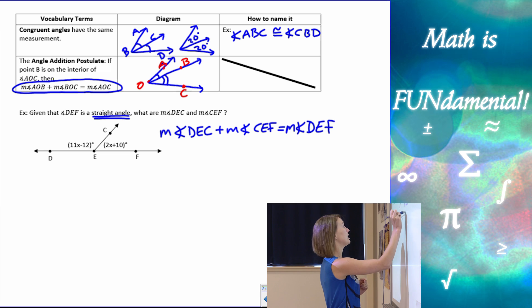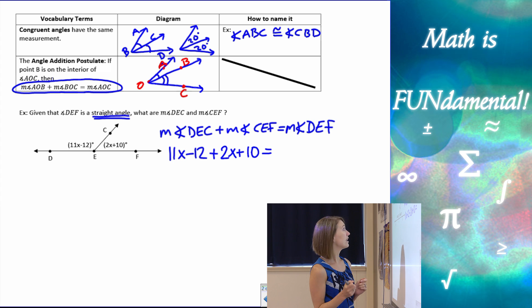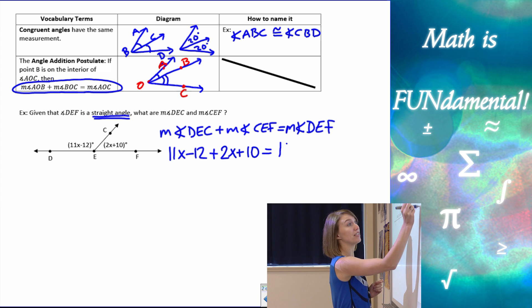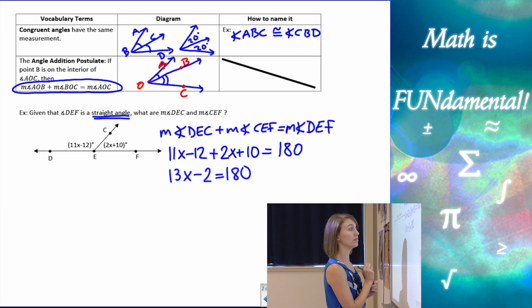The measure of angle DEC plus the measure of angle CEF has to equal the measure of angle DEF. That's our angle addition postulate. Now I can take the parts that I know and substitute them in. I know the measure of angle DEC is 11x minus 12. And I know the measure of angle CEF, because it's on my graph, is 2x plus 10. I also know that it gave me the information that DEF is a straight angle. So I know that the measure is 180 degrees. So here's my equation. Now I can solve for x and then find the measures of those angles. We have 11x plus 2x gives us 13x. Negative 12 plus 10 is a negative 2 equals 180.